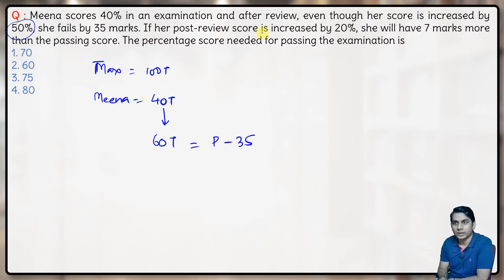In her post review, score is increased by 20%. If her post review, that means 60T, if it is still further increased by 20%, that means this becomes 72T. Now she gets 7 more than the passing marks. So now she gets P plus 7.